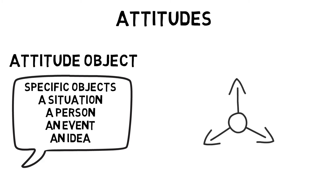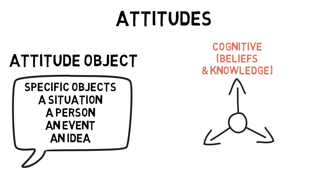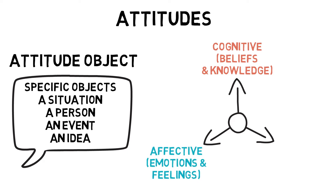The components that make up attitudes are made up of a triadic model. The cognitive component reflects our belief, knowledge, and thoughts, such as 'playing sport keeps me fit and healthy.' The affective component reflects our emotions and feelings, such as 'I enjoy playing sport.' And the behavioural component reflects our intended or actual behaviour, such as 'I participate in sport regularly.'